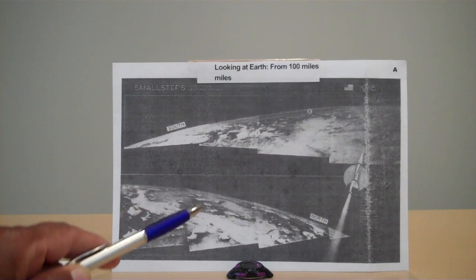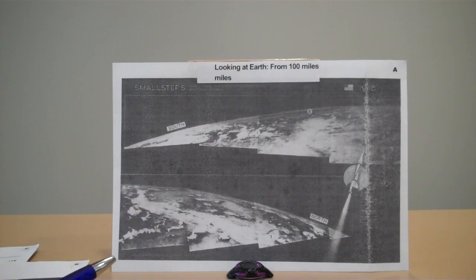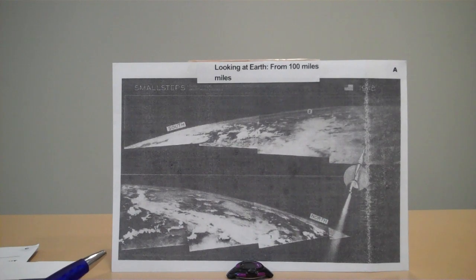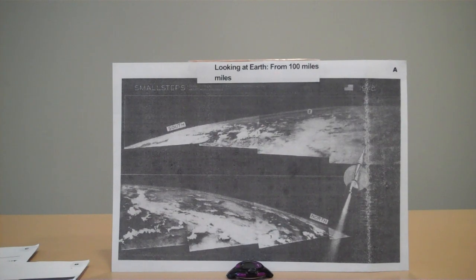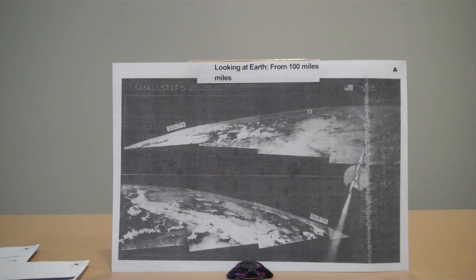The Earth is 24,901 miles in circumference. At 100 miles to 5,000 miles, the curvature, if there's any, must be measured by elevation drop, or ED. At a 24,901-mile circumference, only a fraction of the surface — 100 miles to 5,000 miles above it — can be seen, and only in a specific certain way.